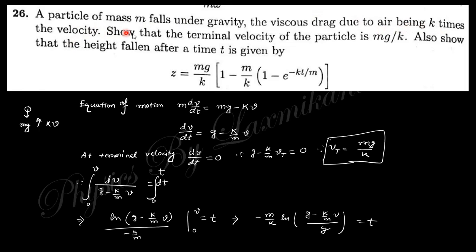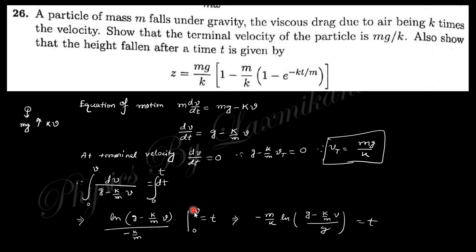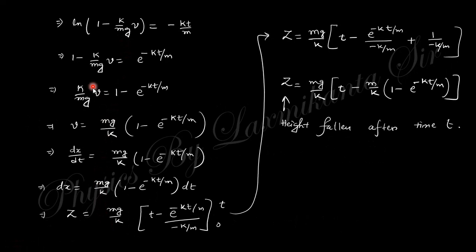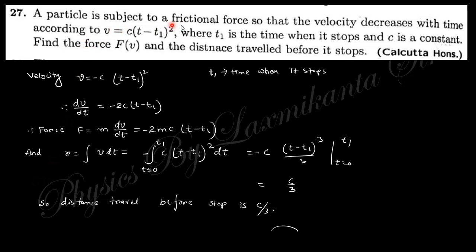Next question: a particle of mass m falls under gravity with viscous drag equal to k times the velocity. Find the terminal velocity and height fallen at time t. Equation of motion: m(dv/dt) = mg − kv. At terminal velocity, dv/dt = 0, giving terminal velocity = mg/k. Integrating for velocity then integrating again gives the height z fallen at time t.